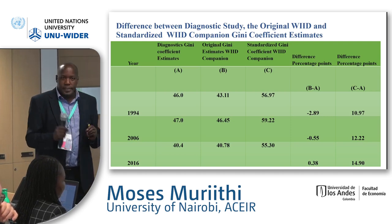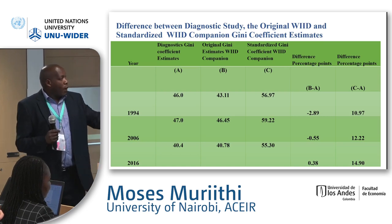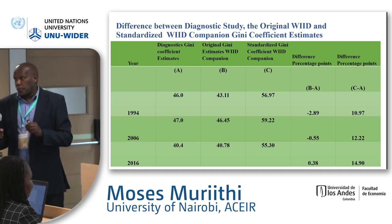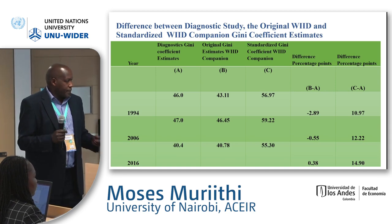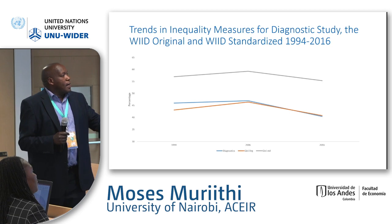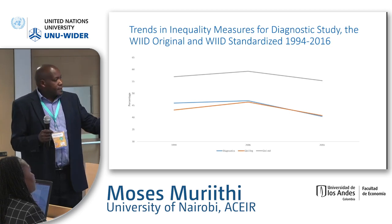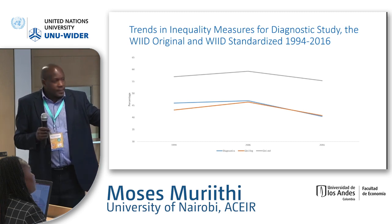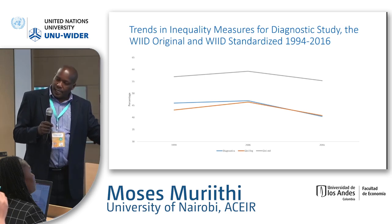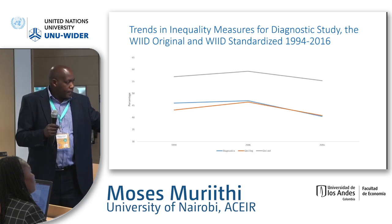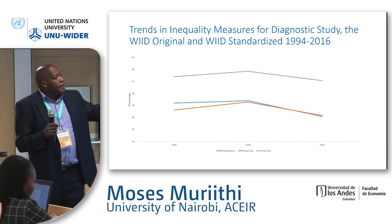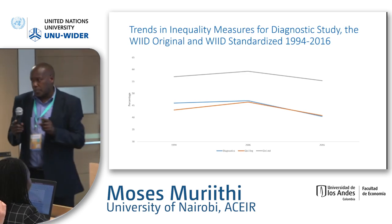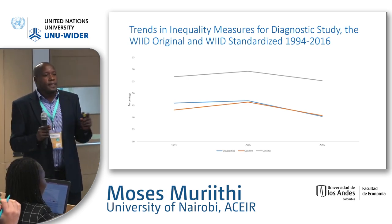Our KNBS Gini was computed using per capita consumption, while the standardized Gini as described by Monica was computed using income per capita. Looking at the trend, the income Gini as reported by the companion WIID is actually much higher than both the KNBS diagnostic Gini and the original WIID Gini. However, the trend is actually similar across the measures, suggesting a scaling issue that needs further investigation.